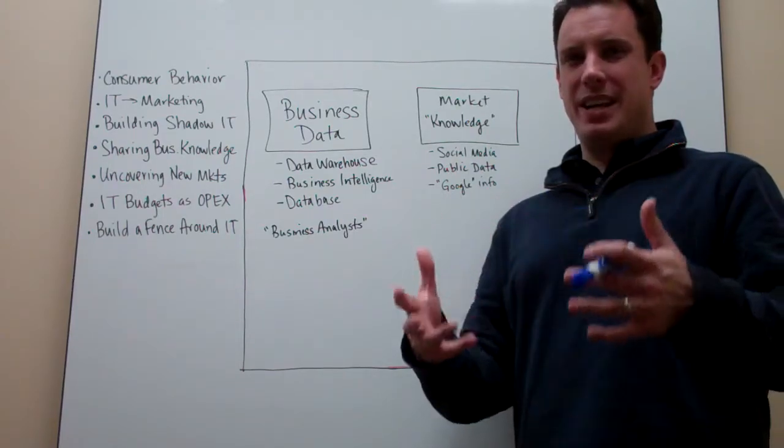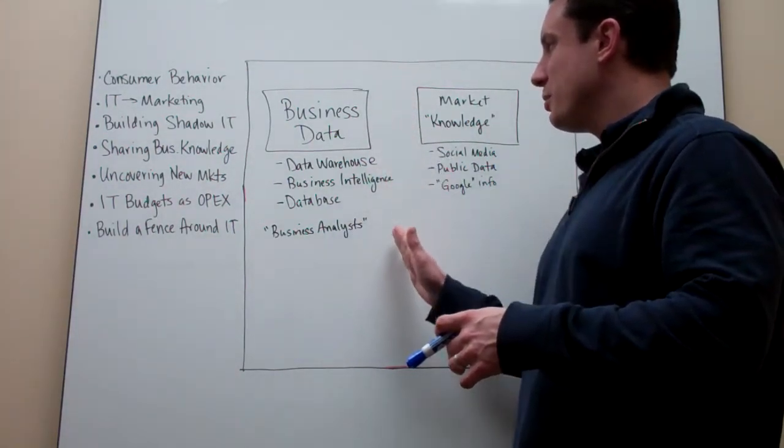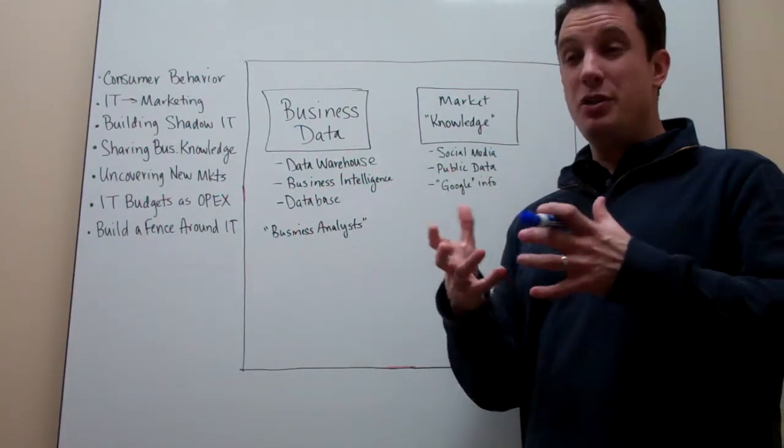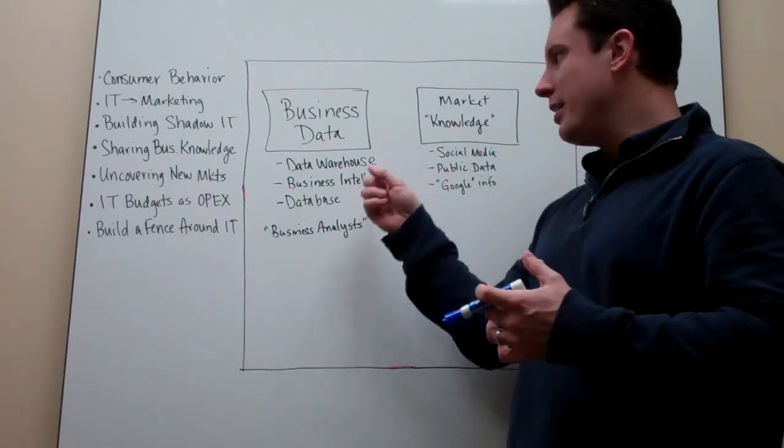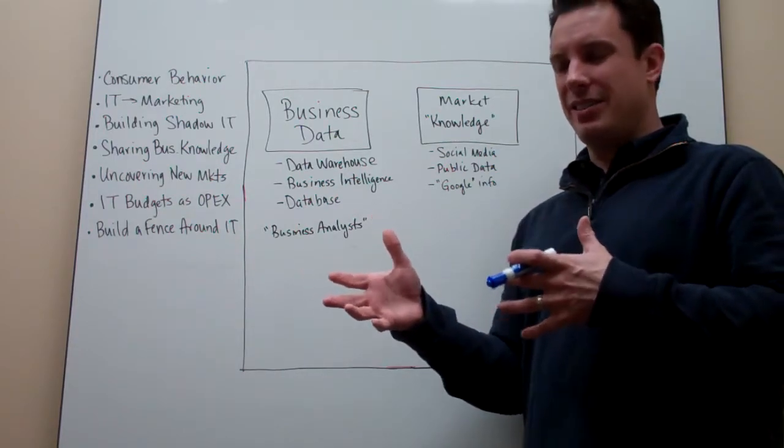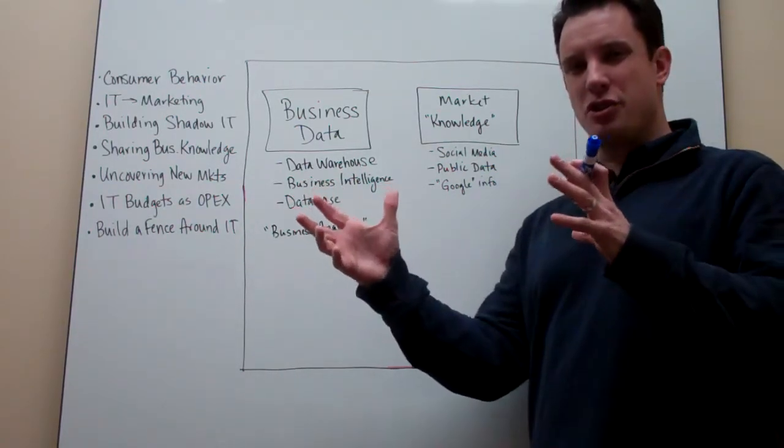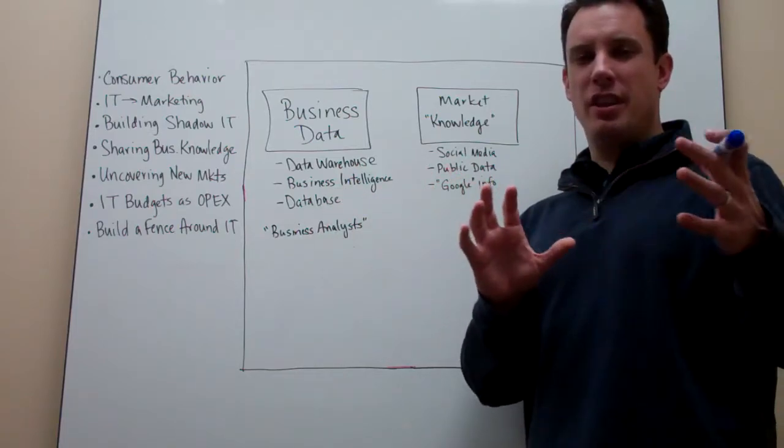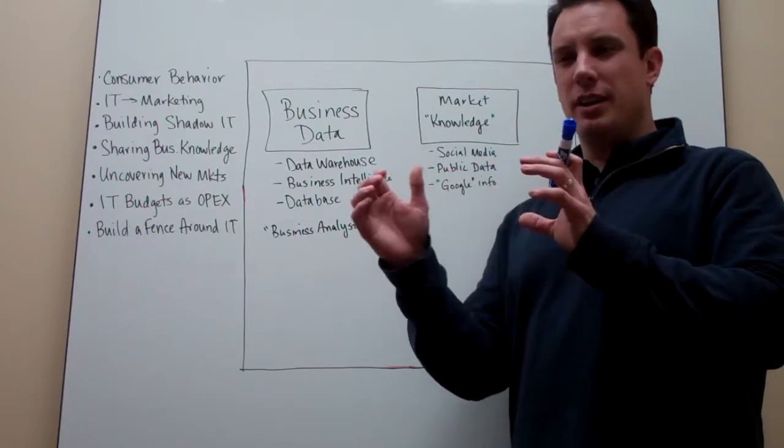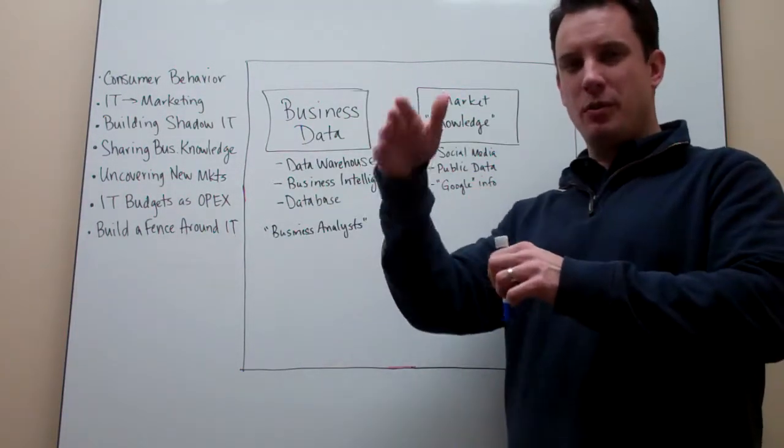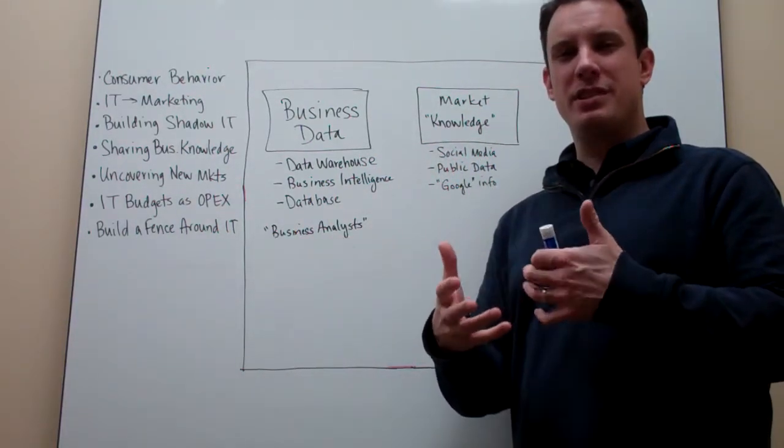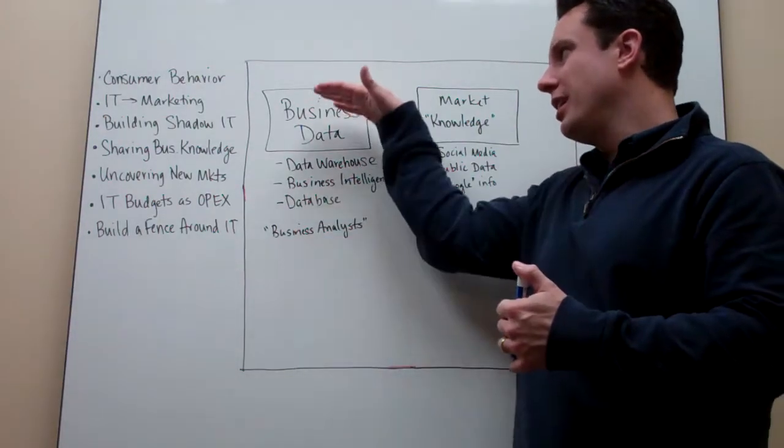There's things that you would traditionally think of as business data. This is going to be a combination of data that you have in-house that might live in something you call a data warehouse or business intelligence. In essence, they live in databases which is considered to be structured information. It's information that fits neatly from manufacturing, product data, market rows and tables. This is where your business analysts tend to hang out.